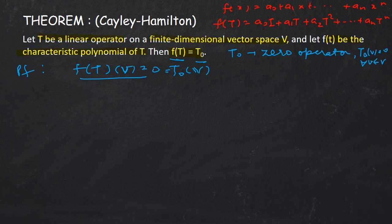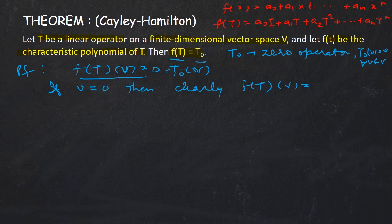If v equals 0, then clearly f(T)(v) = 0 because any operator acting on the zero element gives 0 itself, and f(T) is a linear operator. So we let v be non-zero.